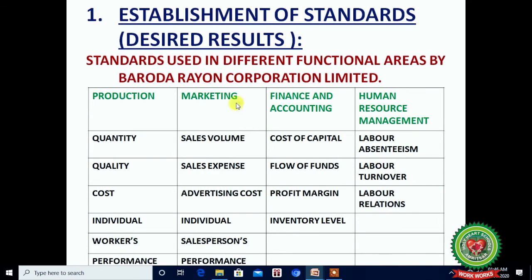Steps in the process of Controlling — Step 1: Establishment of Standards. Standards are used in different functional areas by Baroda Rayon Corporation Limited — production, marketing, finance, and HRM. In production: quantity, quality, cost, individual worker performance. In marketing: sales volume, sales expenses, advertising cost, individual salesperson performance. In finance and accounting: cost of capital, flow of funds, profit margin, inventory level. In HRM: labor absenteeism, labor turnover, labor relations.